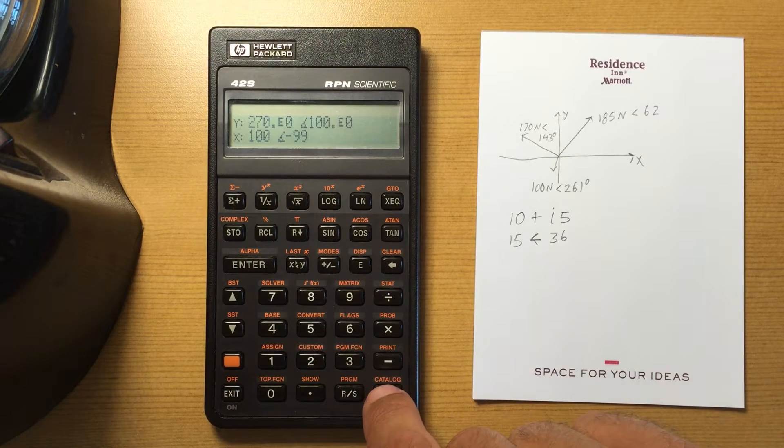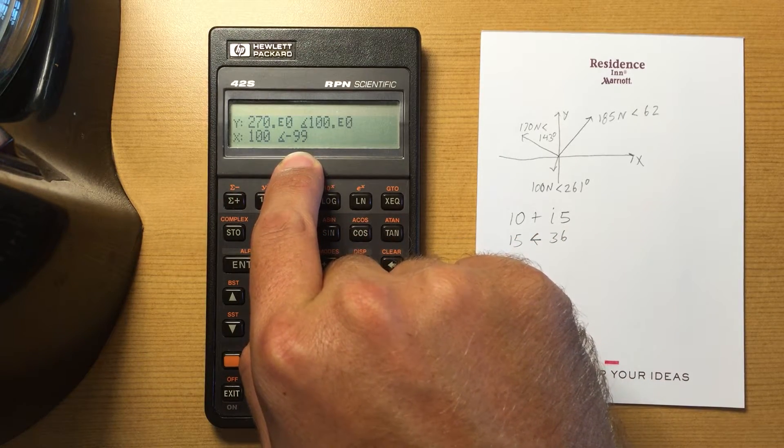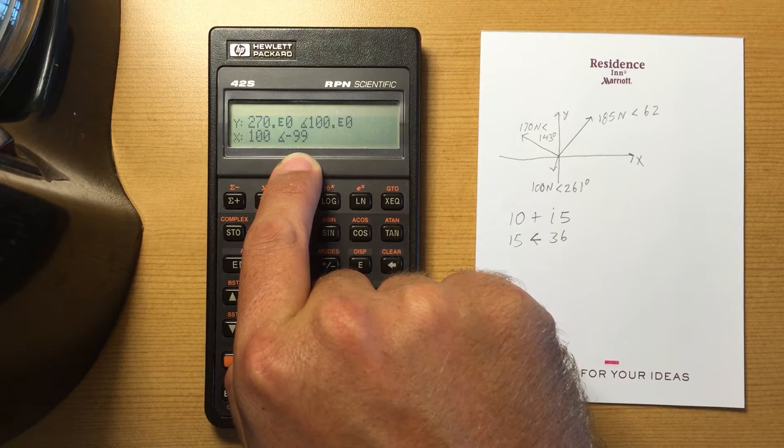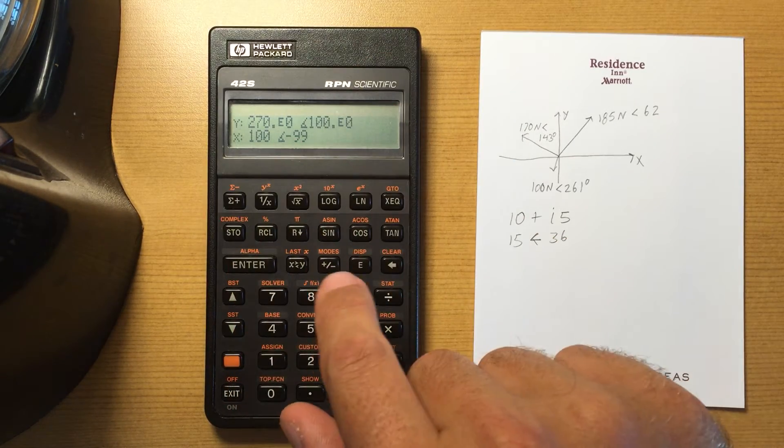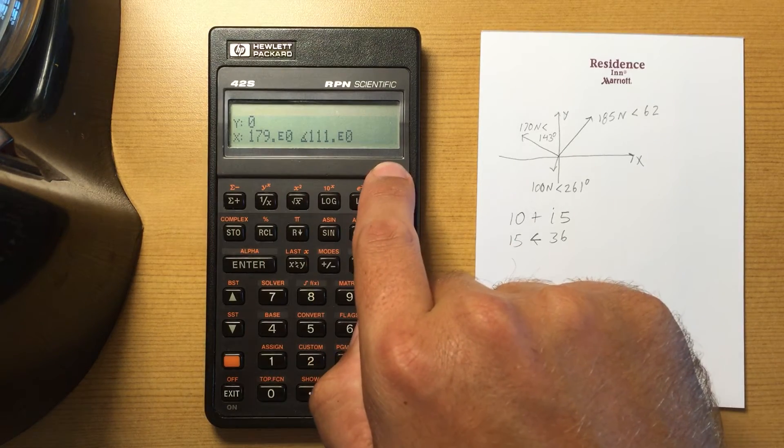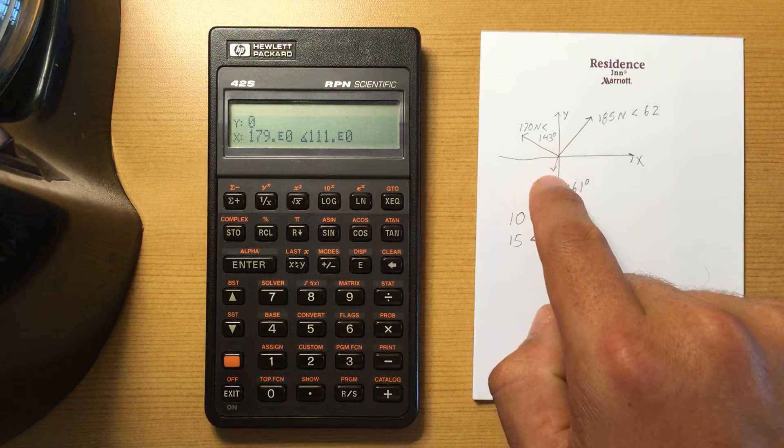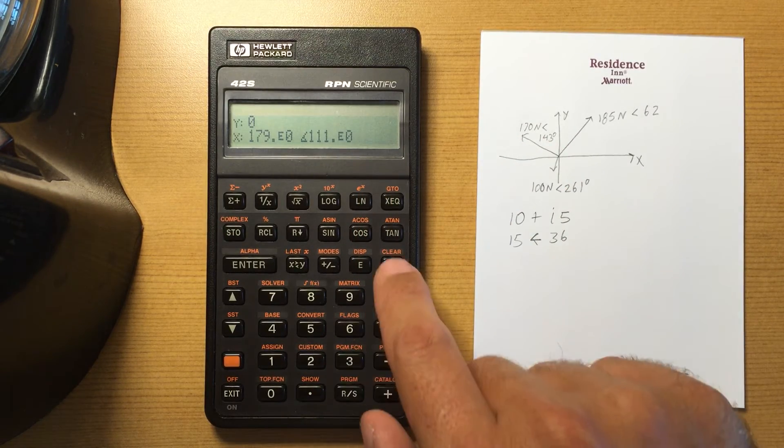And then add that. Notice how it goes ahead and changes that to negative 99, so it goes from positive 180 to negative 180, and add that. And there's my resultant vector. So the sum of all of these is 179 at angle 111.